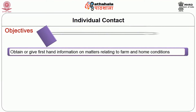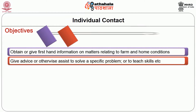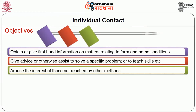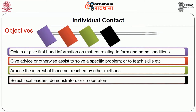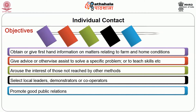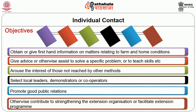Further objectives of farm and home visit are: to give advice or assist in solving a specific problem or to teach skills; to arouse the interest of those not reached by other methods; to select local leaders, demonstrators, or cooperators; to promote good public relations; and to contribute to strengthening the extension organization or facilitate the extension program.